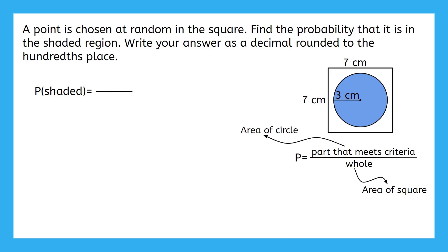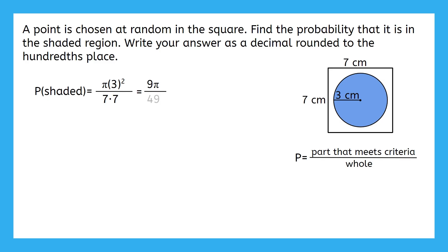The area of the circle is pi times r squared, with 3 being the radius. And the area of the square is 7 times 7. We can simplify this fraction and keep our answer exact, but it is hard to tell from this how likely it is to actually pick a point in the shaded region. Telling somebody that the probability is 9π over 49 is probably going to get you some funny looks. Instead, this would be better off rounded as a decimal. Type this expression into your calculator and get a decimal rounded to the hundredths place. You should have gotten 0.58.